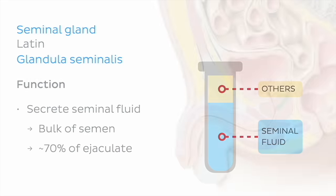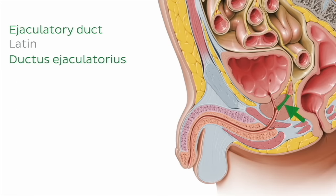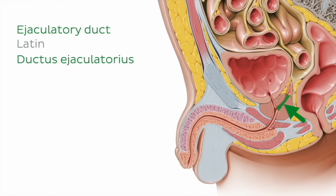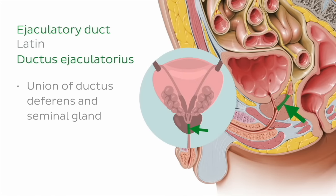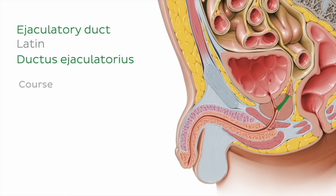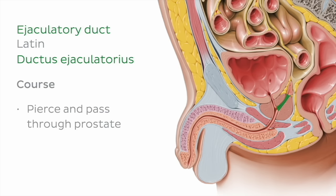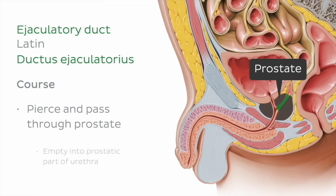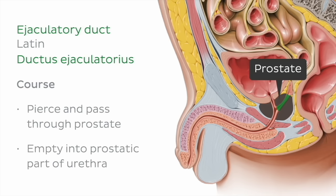We've now reached the ejaculatory duct, which is a paired structure formed by the union of the ductus deferens and the seminal gland on each side. Shortly after this union, these ducts pierce and pass through the prostate and empty into the prostatic part of the urethra.